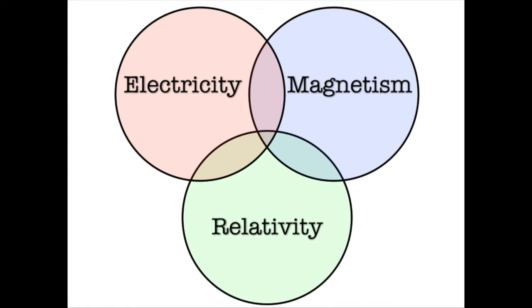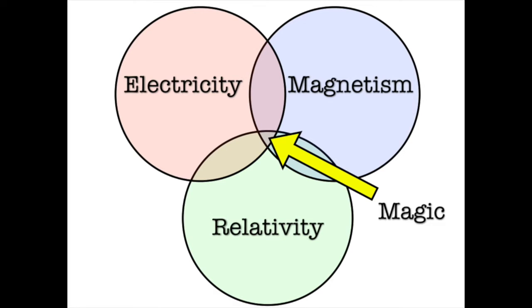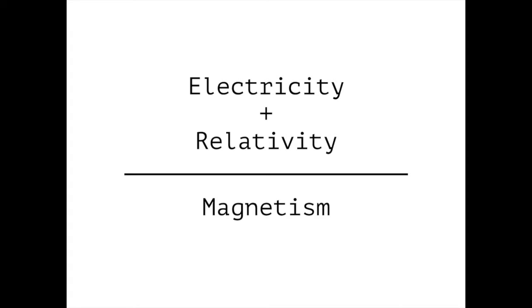Somewhere at the intersection of those three topics is something magical: magnetism is just electricity plus relativity. If we know electricity and special relativity, we can figure out everything we need to know about magnetism — or at least enough to answer that exam question.